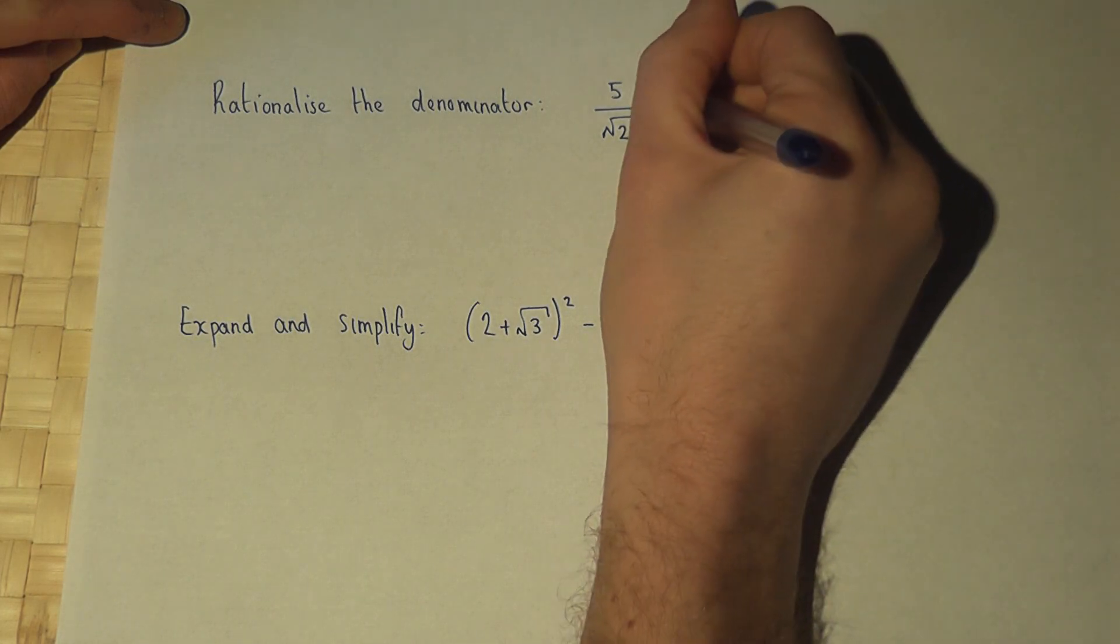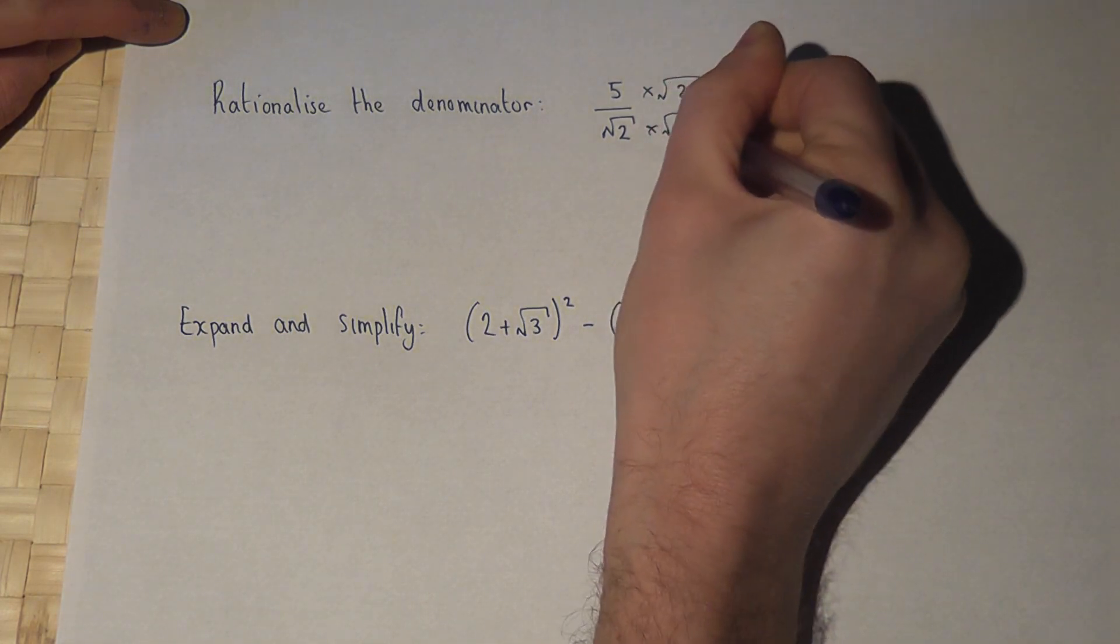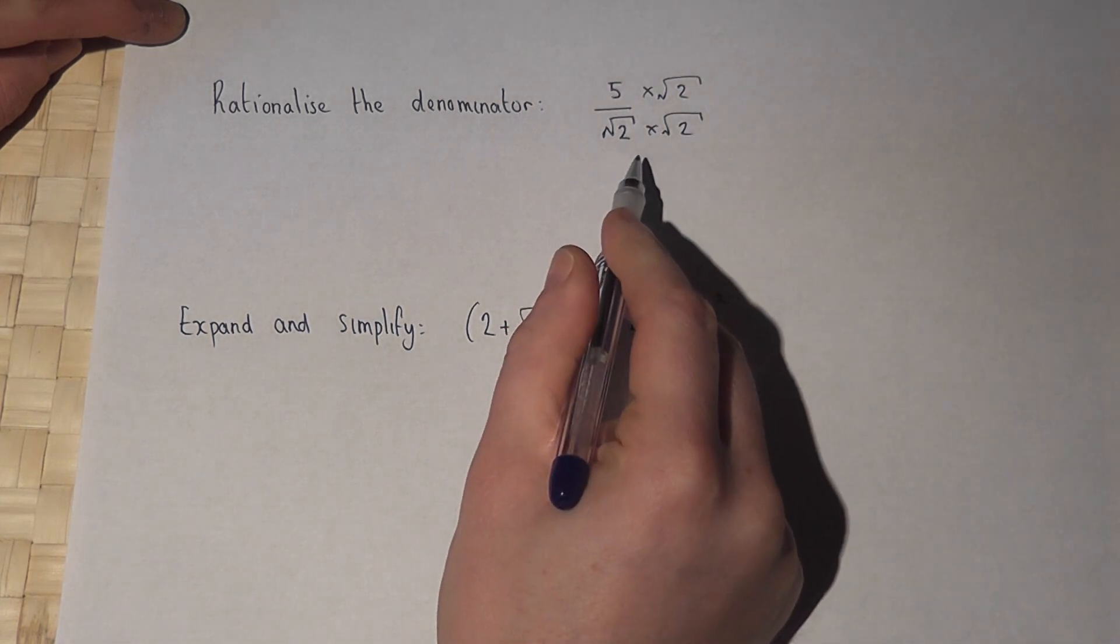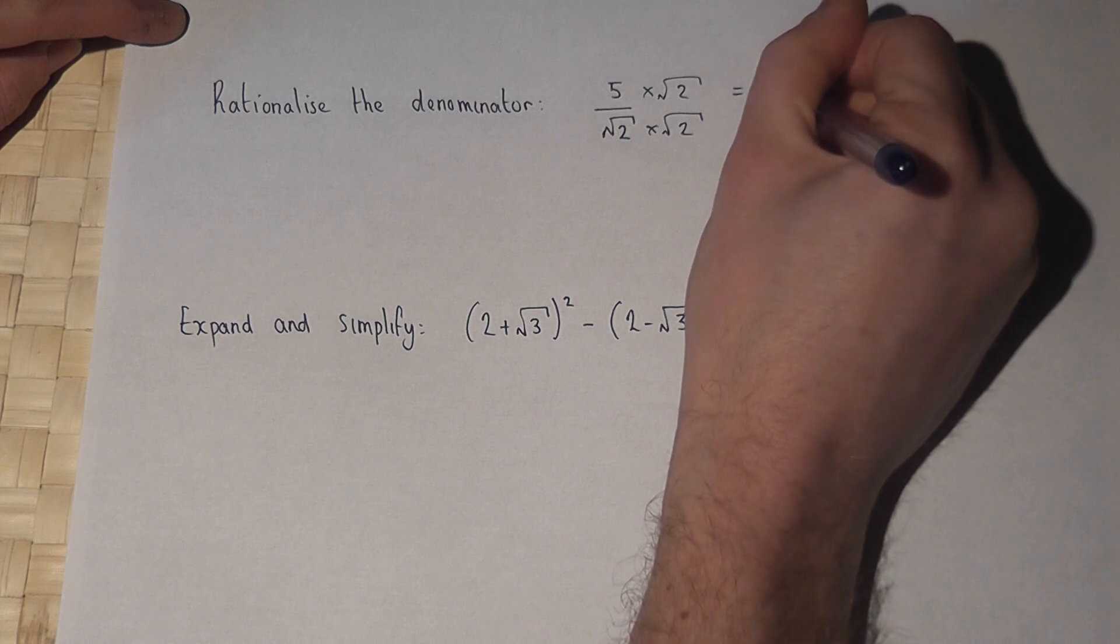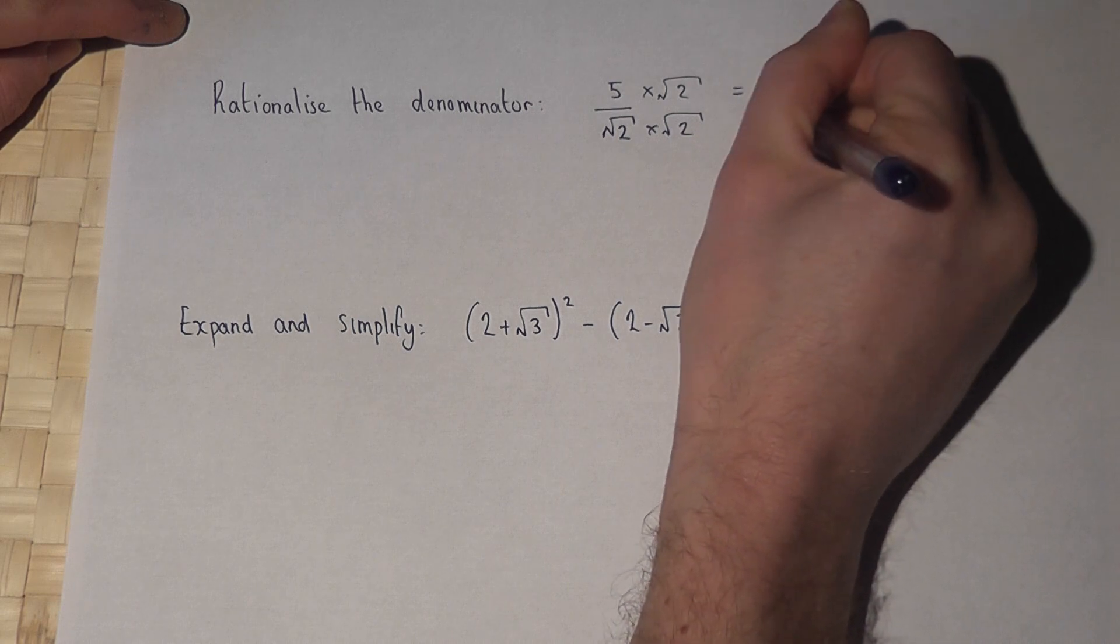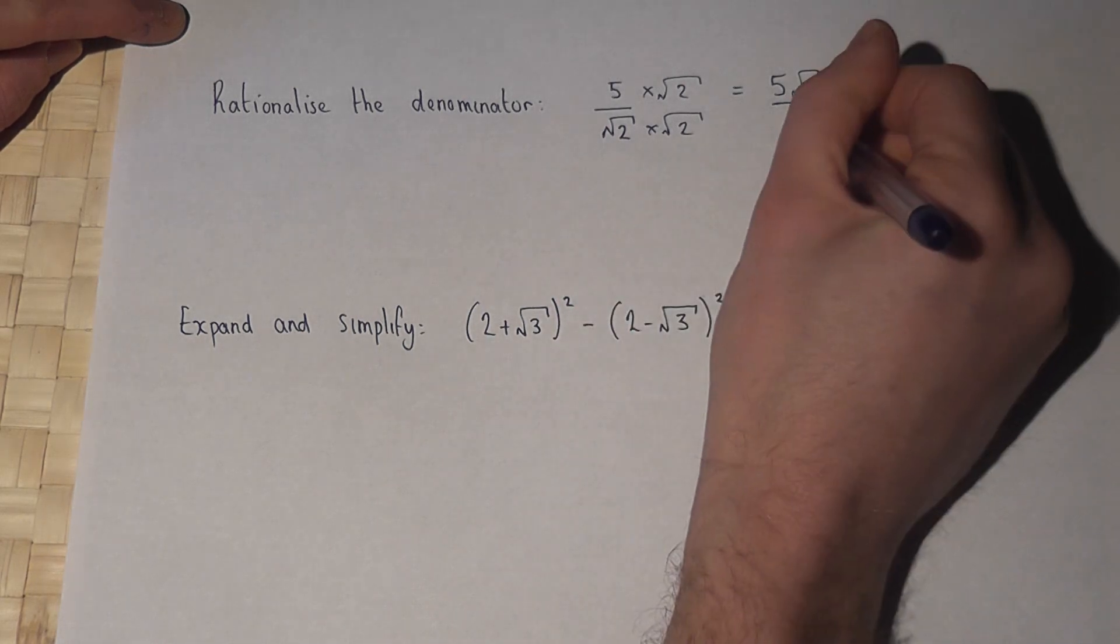Now to do this, we times the top and the bottom of the fraction by root 2. Now 5 times root 2 is just 5 lots of root 2, but root 2 times root 2 is root of 4, which is just 2.